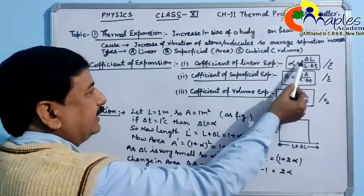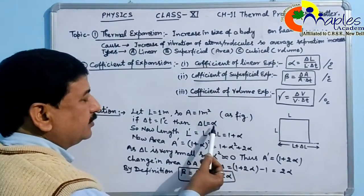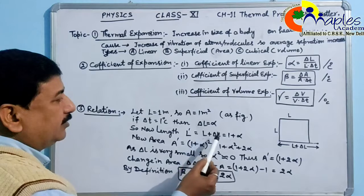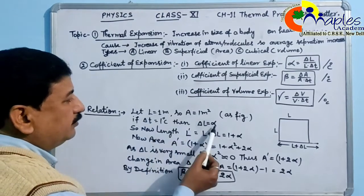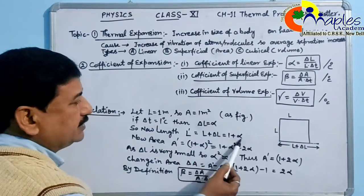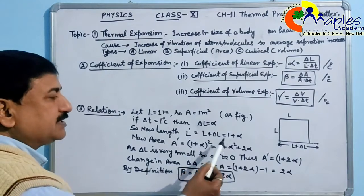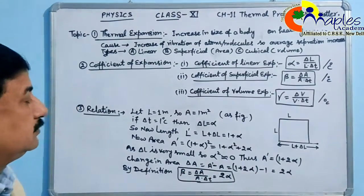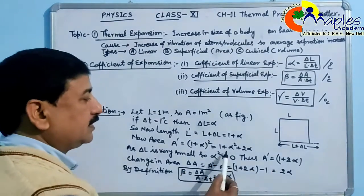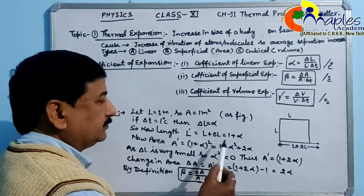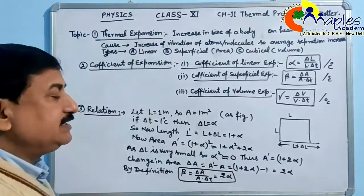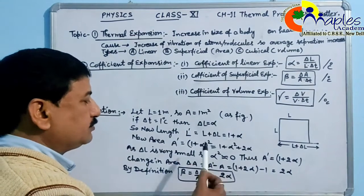Delta L equals alpha. The new size is L plus delta L, which equals 1 plus alpha. So the new area is (1 + alpha)², which equals 1 + 2α + α². Because delta L is very small, alpha squared approaches zero, so we can neglect α².